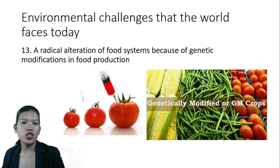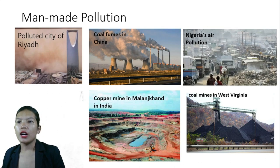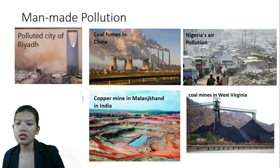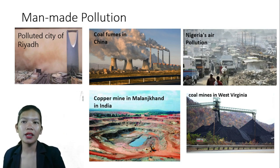The thirteenth environmental problem is a radical alteration of the food system because of genetic modifications in food production — what we call genetically modified or GM crops. Those are some of the examples of environmental problems.